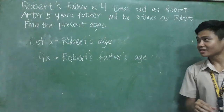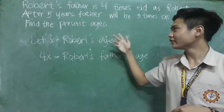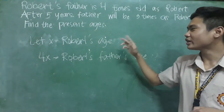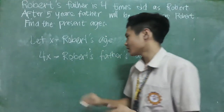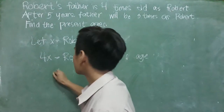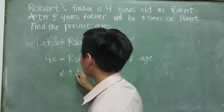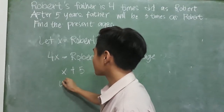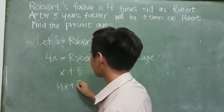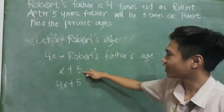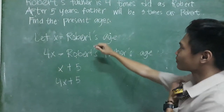Next, it is stated that after five years, so we can set these equations as X plus 5 and 4X plus 5, because we get five from the 'after five years.'